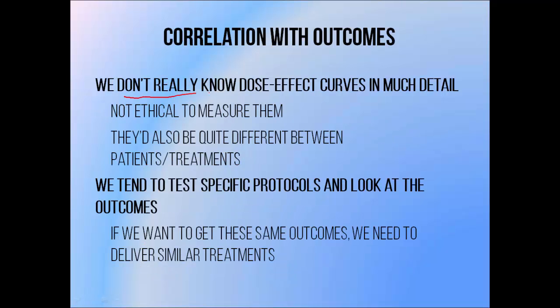We don't really know the relationship between radiation dose and the biological effects in much detail. We know generally speaking that if we deliver more dose, we are more likely to sterilize a tumour and more likely to get side effects, but we don't really know at what rate these things vary with dose in humans. This is in large part due to the fact that it's not ethical to measure dose-effect curves, because in order to do so, we'd have to deliver a whole range of doses from very high to very low and look at the effects on people. That would involve overdosing some patients, resulting in nasty side effects, and underdosing some patients, resulting in treatment failure.